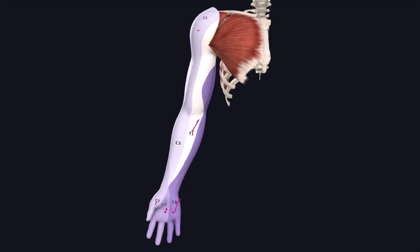The pre-axial border of the upper limb is placed cranially and is represented by the thumb. The post-axial border is placed caudally and is represented by the little finger. The pre-axial border is marked by the position of the cephalic vein, whereas the post-axial border is marked by the position of the basilic vein.